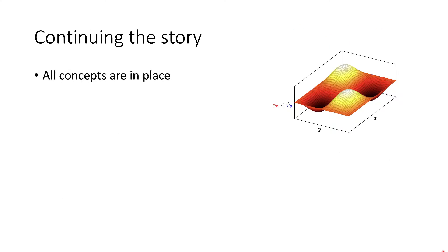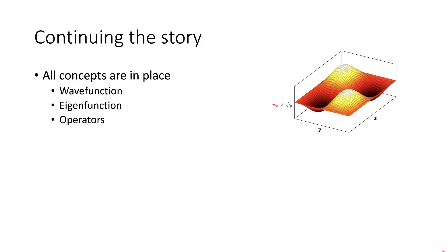In continuing the story of quantum mechanics, all the concepts we need to complete this course are in place. We've talked about the wave function and what it means in terms of the mathematics, but also the physical observables of the system. We also spoke about eigenfunctions — a function which simply returns itself when an operator acts on it — and the significance of operators, particularly in reference to the Schrödinger equation. We also looked at the separation of variables, being able to consider two components, for example the x and y components, separately.